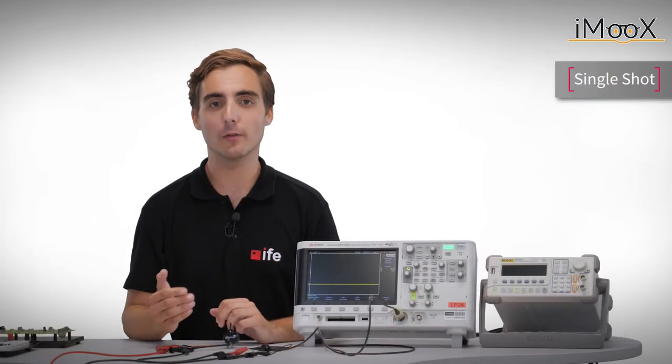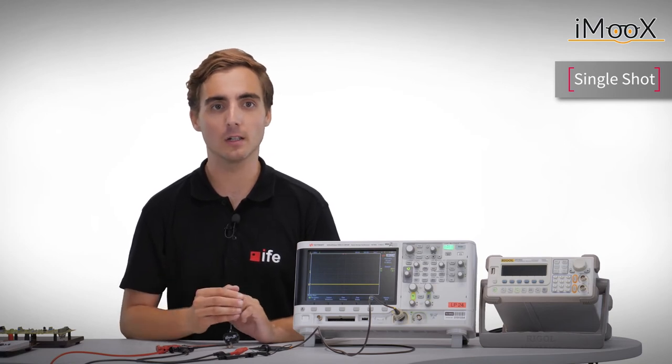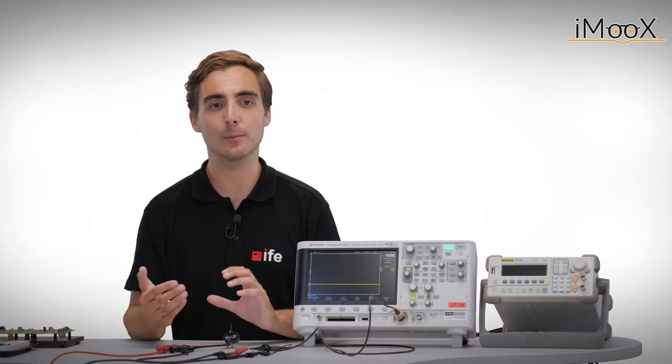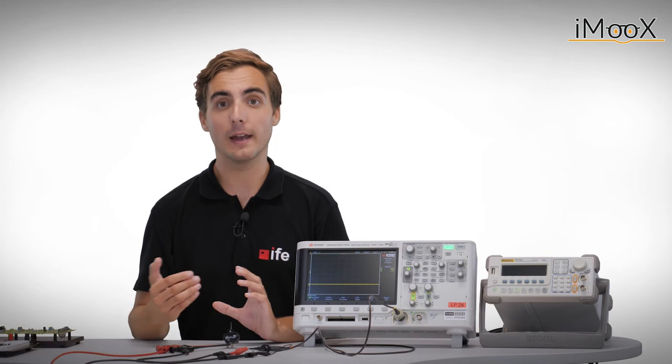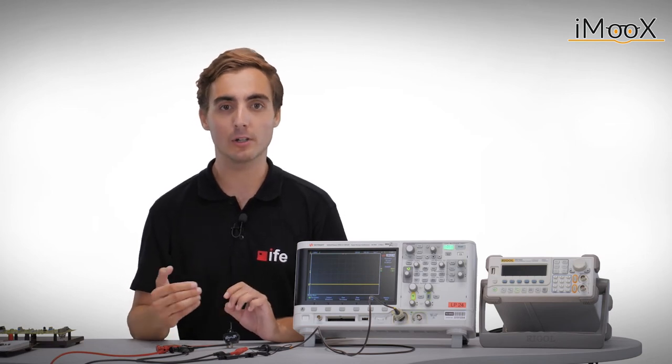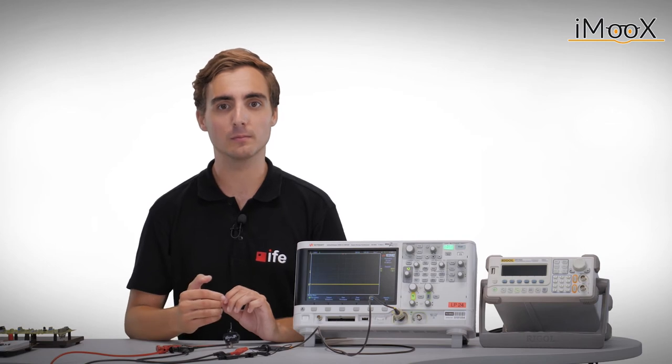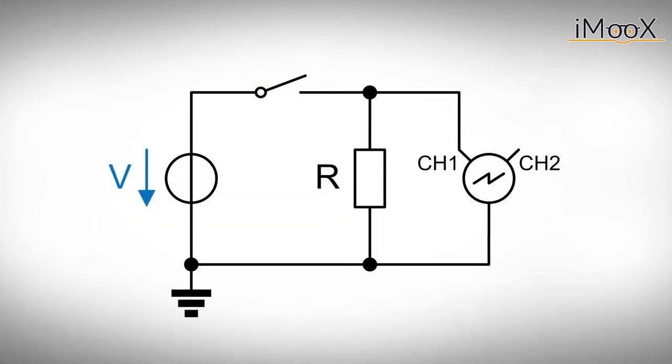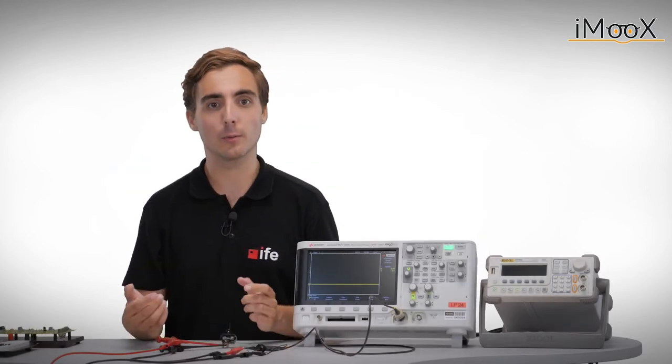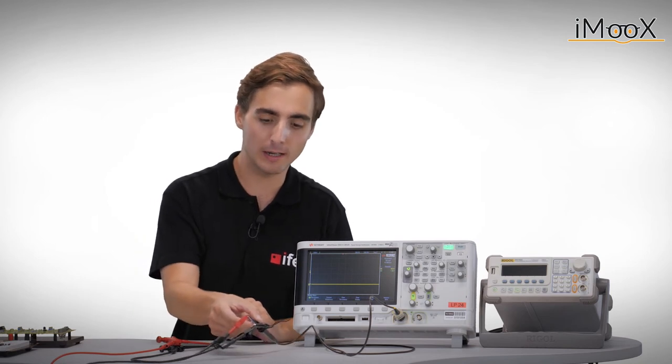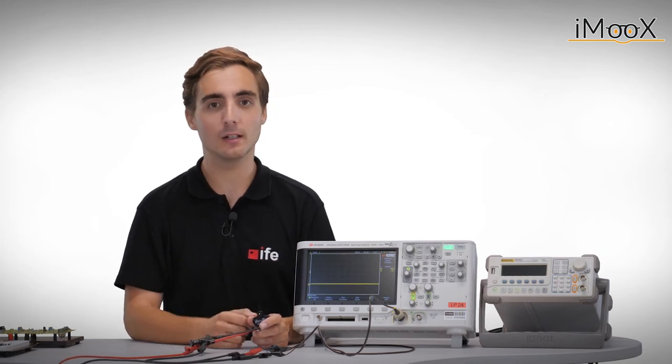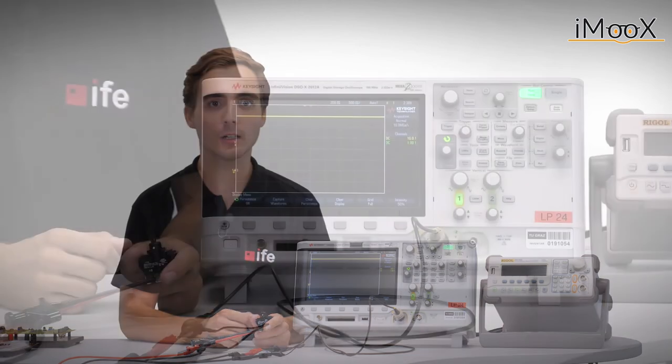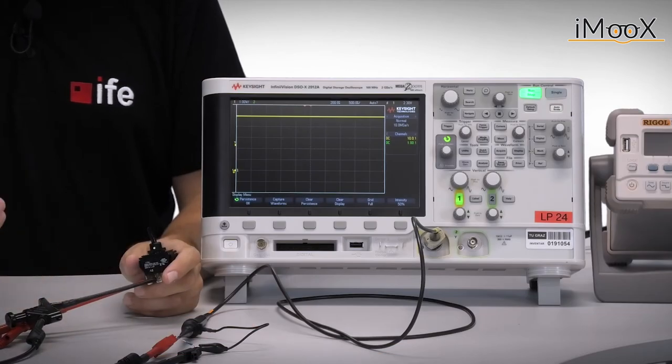In the last video, we have learnt about triggers that capture a periodic signal. But what should we do if the signal we want to capture does only occur once at a random point in time? An example is observing the contact bouncing or chattering when using mechanical switches. Have a look at our test setup. We have a switch that is connecting a resistor to a voltage source. We can observe the voltage on a node between the switch and the resistor. The trigger itself is set to rising edge. Let us now flip the switch. We see that the switching process is not captured.